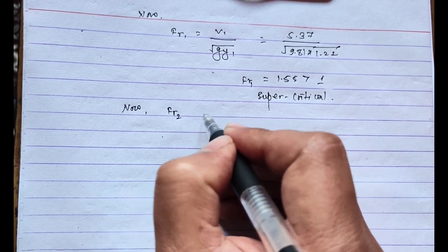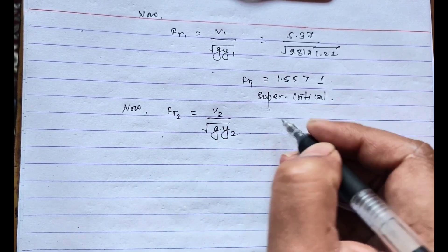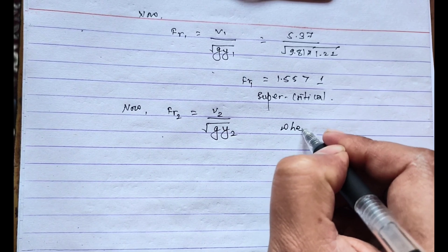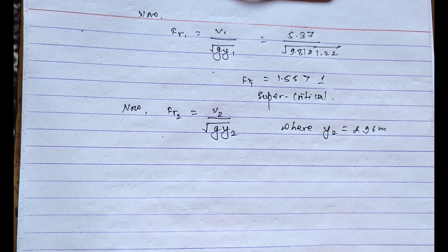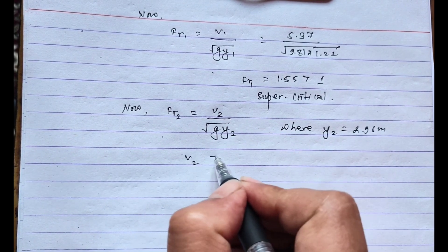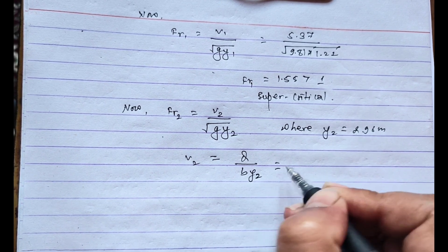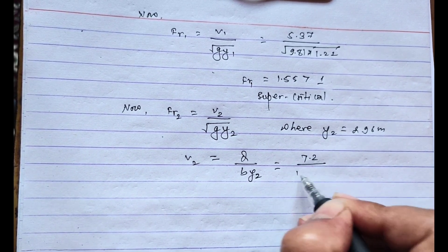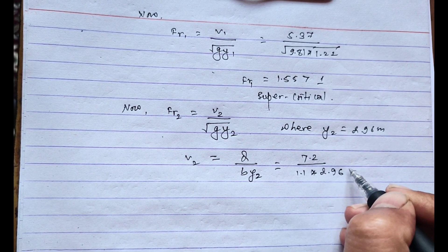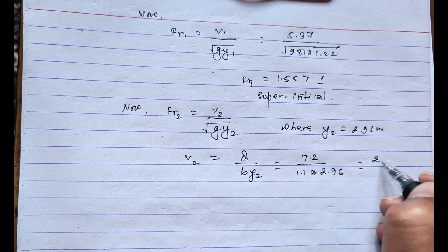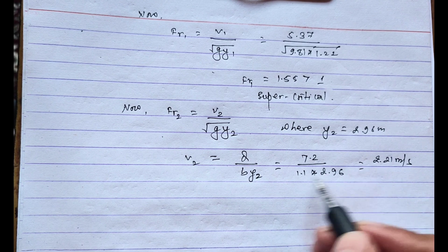Now calculation for the Froude number Fr2 equals V2 by root over g y2, where y2 is calculated as 2.96 meter. Now first we will calculate V2 equals Q by B y2, where the value of Q is 7.2, B is 1.1, and y2 is 2.96, equals 2.21 meter per second.